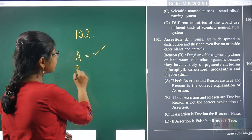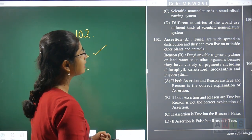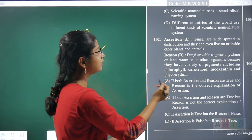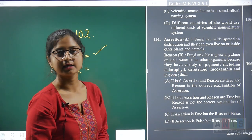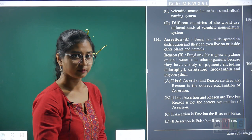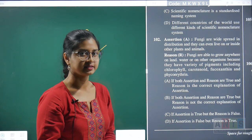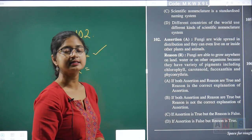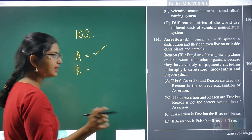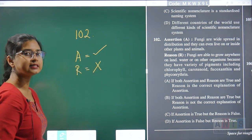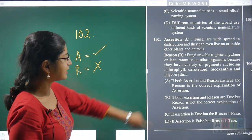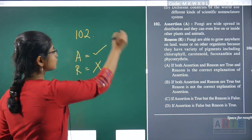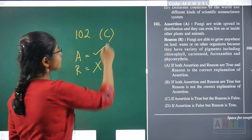Moving to the reason: fungi are able to grow anywhere on land, water, or on other organisms — this part is correct. However, 'because they have a variety of pigments' is where the statement becomes wrong. Fungi do not have any variety of pigments; chlorophyll, carotenoid, fucoxanthin, phycoerythrin — these pigments are absent in fungi. So the reason is incorrect. If assertion is true but reason is false, question 102's correct answer is option C.